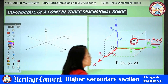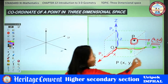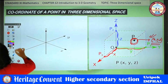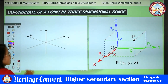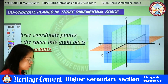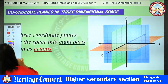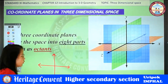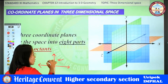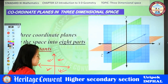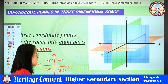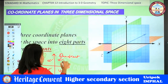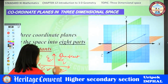So in three-dimensional space, the position of point P is described using the coordinate system in three-dimensional geometry. Now, in the case of a two-dimensional plane, the plane is divided into four equal parts, each called a quadrant — the first quadrant, second quadrant, third quadrant, and fourth quadrant.